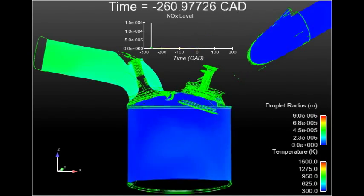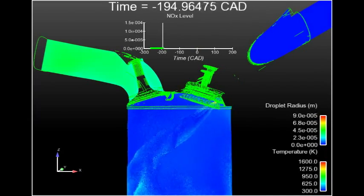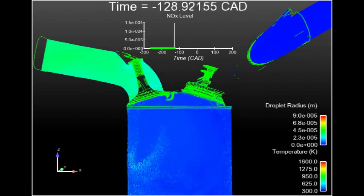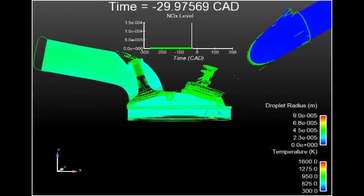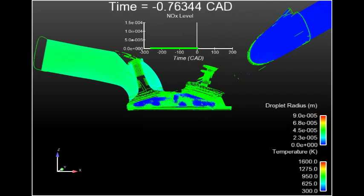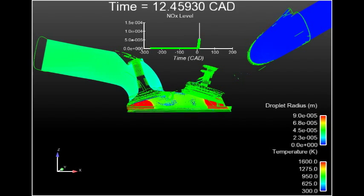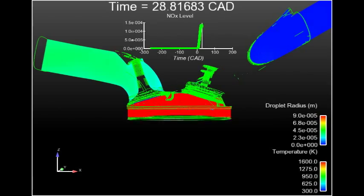The diesel fuel is then injected close to the top dead center, which results in volumetric auto ignition followed by heat release. Data from these simulations show that dual fuel engines can produce low levels of both NOx and soot emissions.